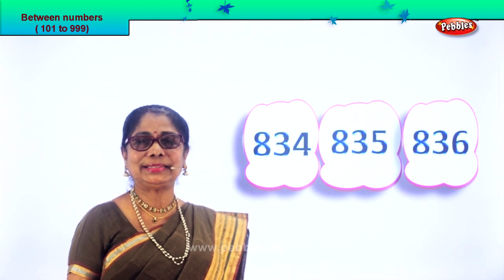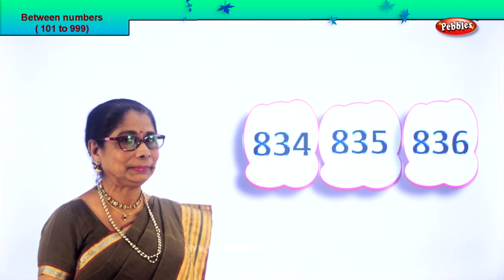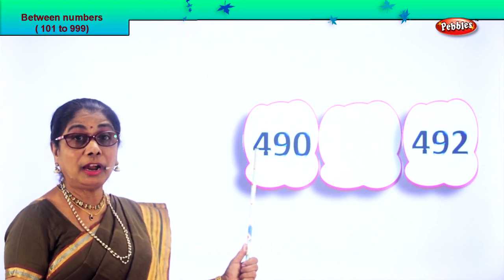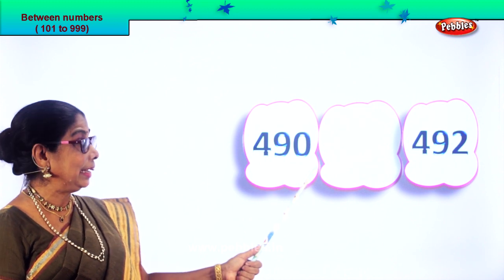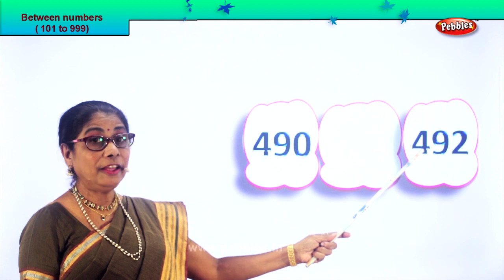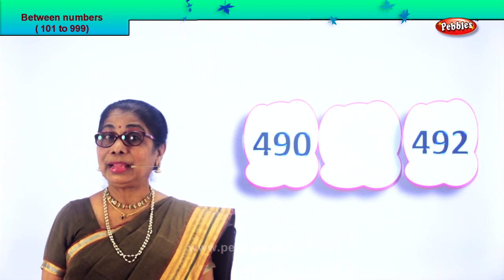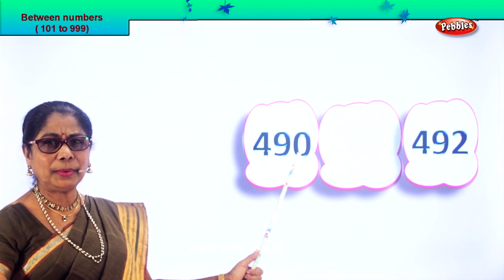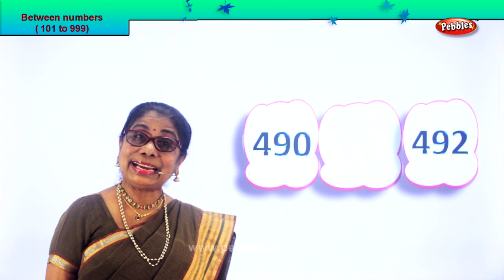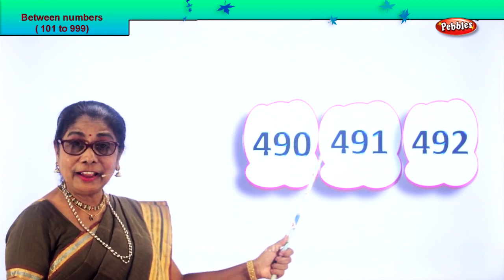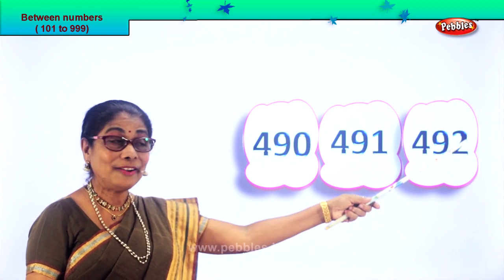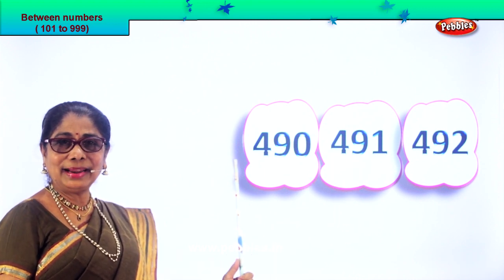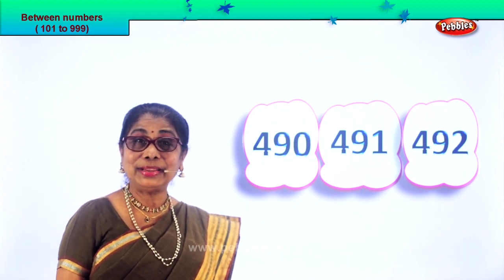I'm sure you are enjoying the exercise. Let's take another set of numbers and guess the number that comes between the two numbers. Here we are: 490 and 492. So 490, 491, 492. The number between is 491. Did you enjoy?